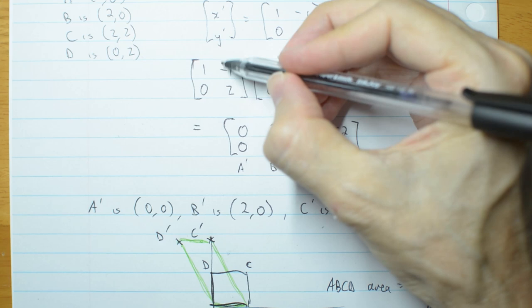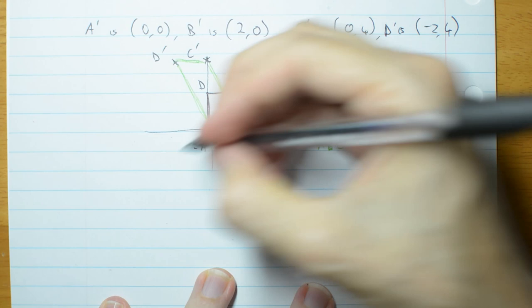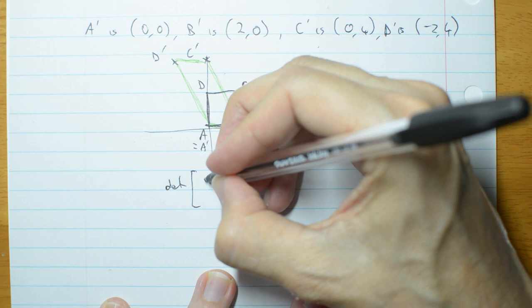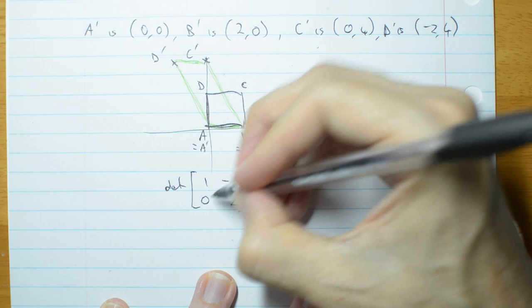Now my question is, what's the determinant of this matrix? The determinant of 1 minus 1, 0, 2 is 2 take 0, which is 2.